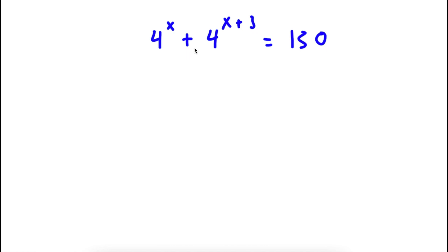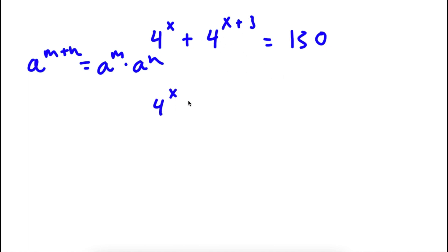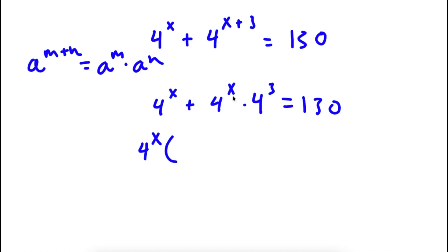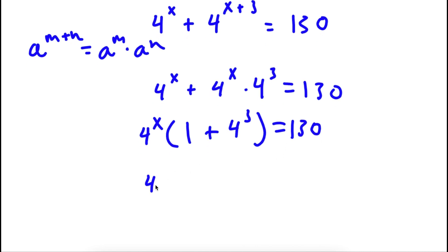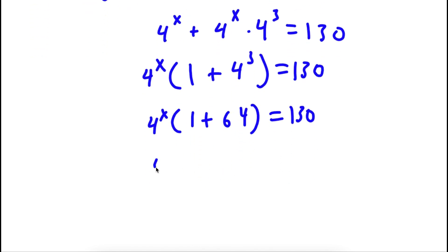Alright, so for the second bonus problem I have 4 to the power of x plus 4 to the power of x plus 3 is equal to 130. If I have something in the form a to the power of m plus n, this is equal to a to the power of m times a to the power of n. So 4 to the power of x plus 3 becomes 4 to the power of x times 4 to the power of 3. I can factor out 4 to the power of x from the left-hand side, giving 4 to the power of x times 1 plus 4 to the power of 3. Since 4 to the power of 3 is 64, and 64 plus 1 is 65.